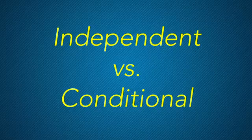Conditional probability is the probability that event A will occur given that another event B has already occurred. For example, if you were asked to pull the ace of spades out of a deck of cards, the probability of pulling it out on the first try would be the independent probability of one in 52.